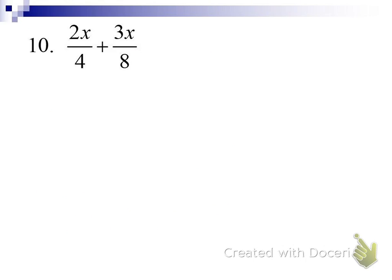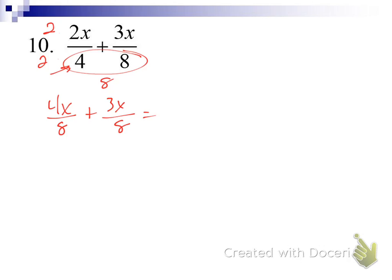Let's start actually adding and subtracting these fractions. For number 10, the denominators are just numbers, so the LCD is 8. This fraction needs to be multiplied by 2, which means 2x gets multiplied by 2. We get 4x over 8 plus 3x over 8, add the numerators to get 7x over 8, and we cannot reduce that.